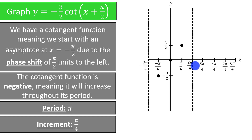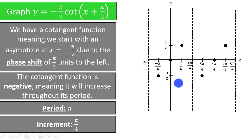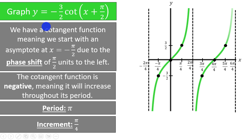The remaining 4 points will just be repeats of what we already have. If we connect the dots, we will have the graph of y equals negative 3 halves cotangent of x plus pi over 2. That finishes this video on graphing transformations of tangent and cotangent.